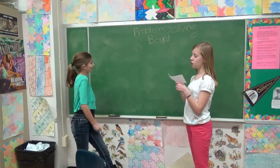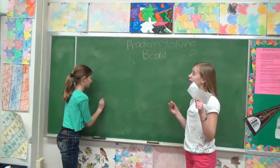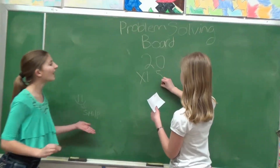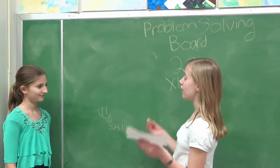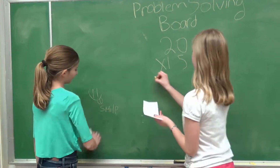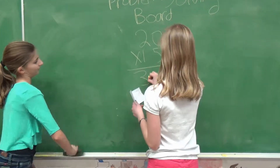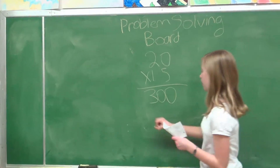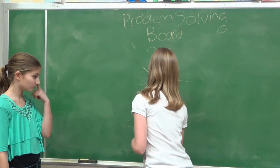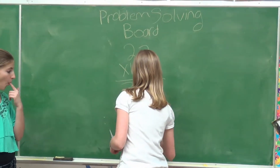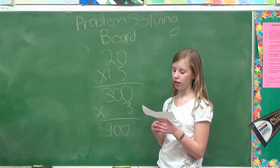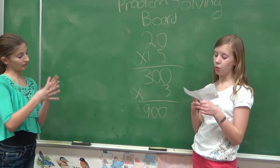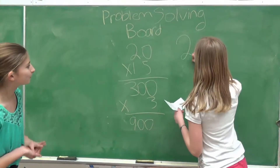There are three rooms each measuring 20 feet by 15 feet. I'm going to multiply those to get the area. And I get 300. But there's three rooms, so I'm going to multiply that by three. And I get 900. Since one gallon covers 600 feet and it's only sold in one-gallon buckets, we need two buckets.